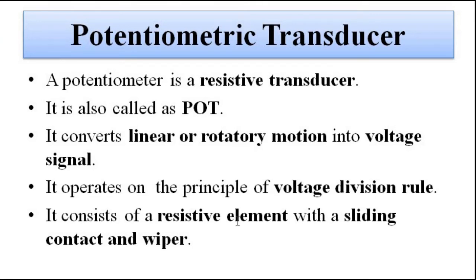Potentiometric transducers are resistive transducers — they depend on change in resistance. The main parameter that varies and gives us information that some external parameter is changing is through change in resistance. The potentiometer operates on the principle of the voltage division rule. It can either be a linear movement potentiometer — rectilinear, to-and-fro motion — or a rotary movement. The basic construction is a resistive element with a sliding contact.